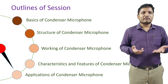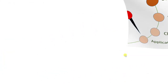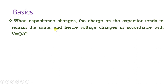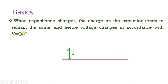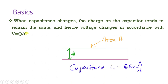Let us begin with the basics of the condenser microphone. As its name indicates, when capacitance changes, the output voltage changes — meaning the electrical signal is generated based on capacitance. The basic formula is V = Q/C, where the charge Q in the microphone remains constant. When diaphragm movement occurs, there is a change in distance, which depends on capacitance. So as capacitance changes, voltage changes, and that change in capacitance generates the electrical signal.